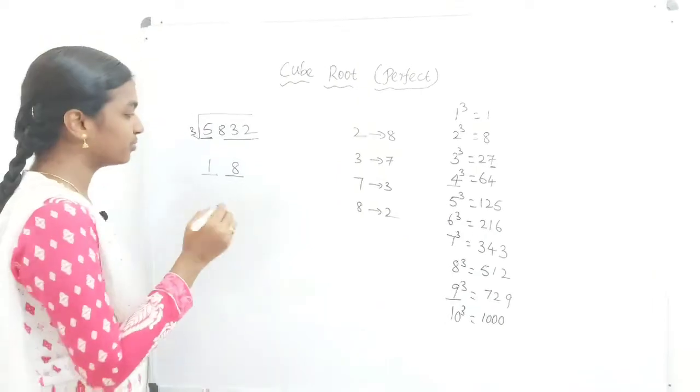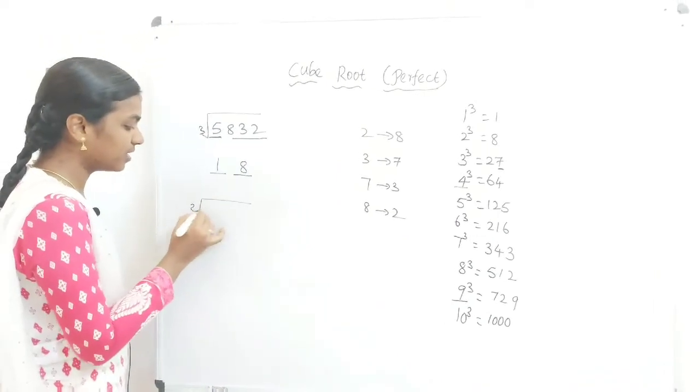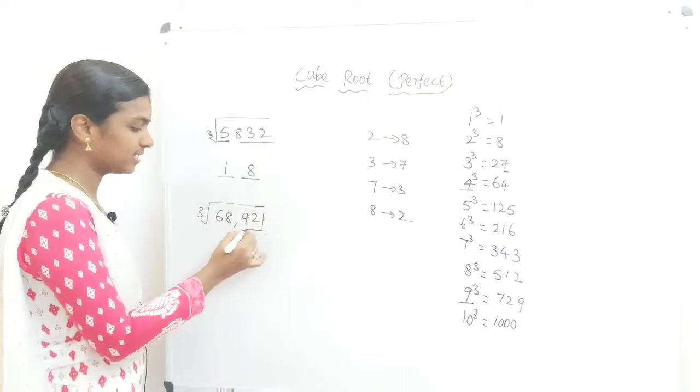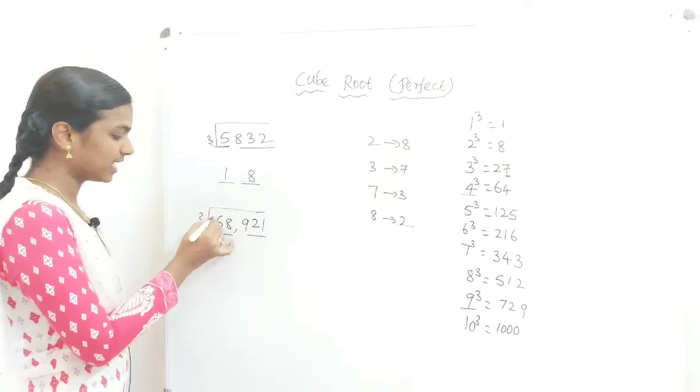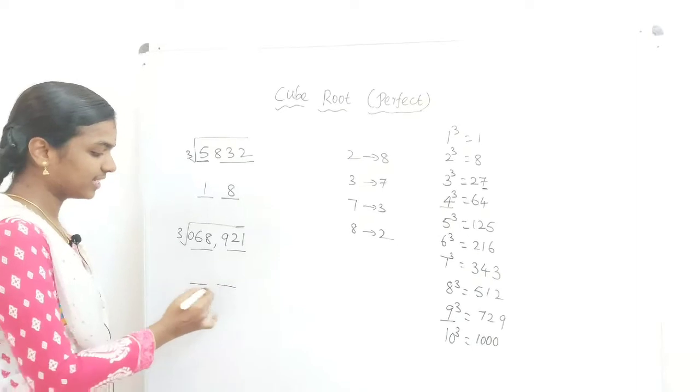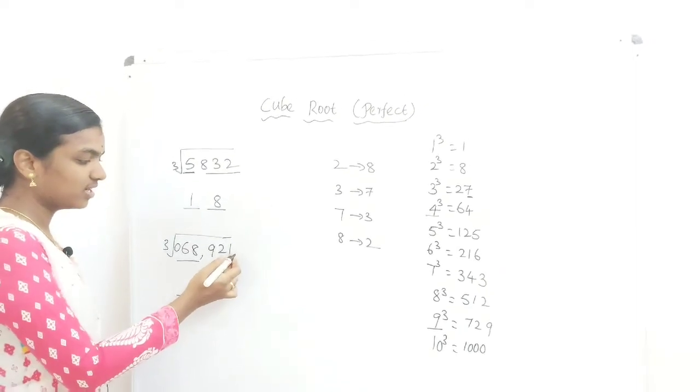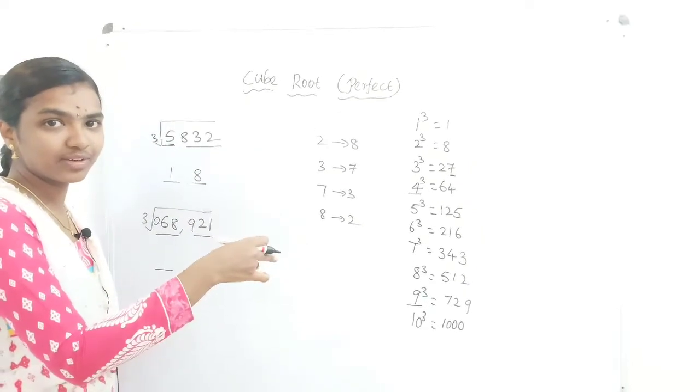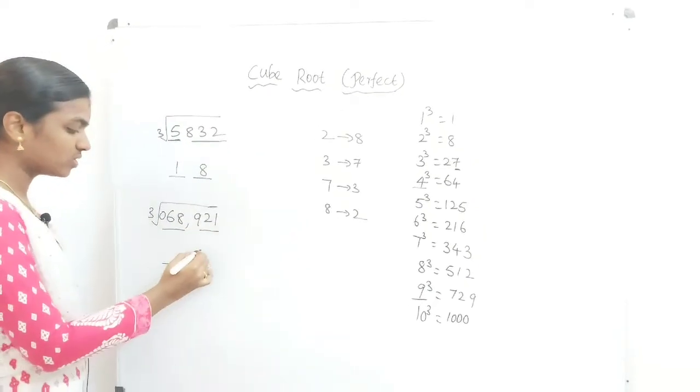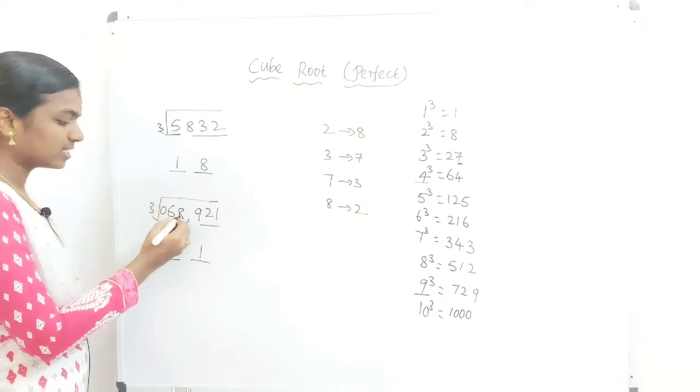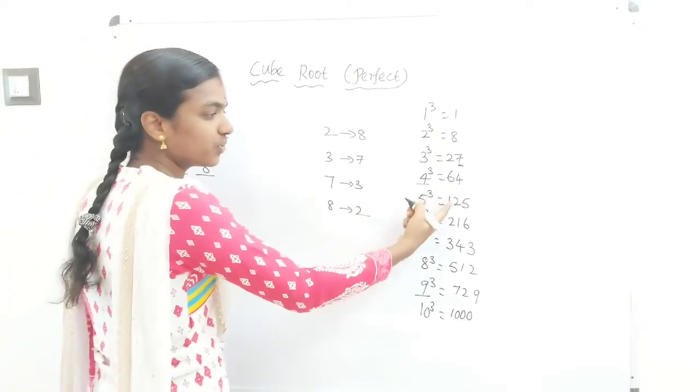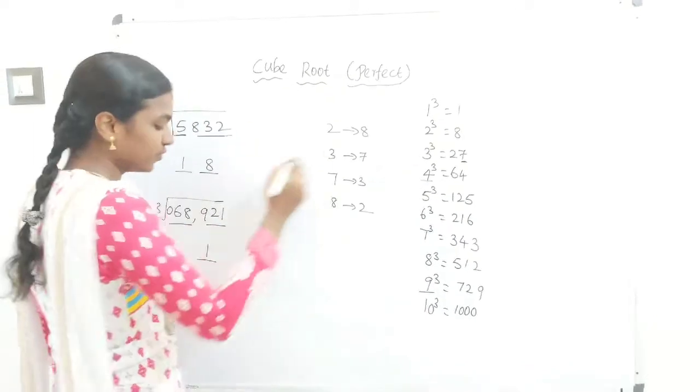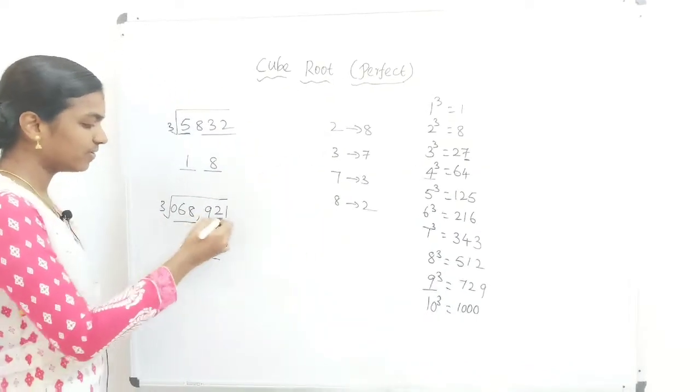For the 5-digit number, cube root of 68921. Split 3 digits from right. Our answer will be 2 digits. The last digit is 1, so 1³=1. Our answer ends in 1. Now 68 lies between 64 and 125. Take the lowest cube, which is 4. So the answer is 41.